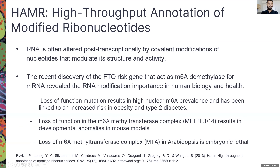So what is HAMR? HAMR is the High-throughput Annotation of Modified Ribonucleotides. RNA is often altered by covalent modifications of nucleotides that modulate its structure and activity. The recent discovery of the FTO gene, which acts as an M6A demethylase for mRNA, revealed the importance of RNA modifications in human biology and health — for example, it has been tied to increased risk of obesity and type 2 diabetes.